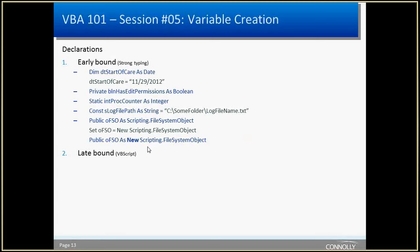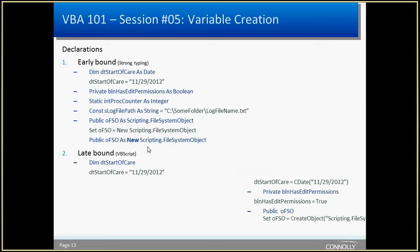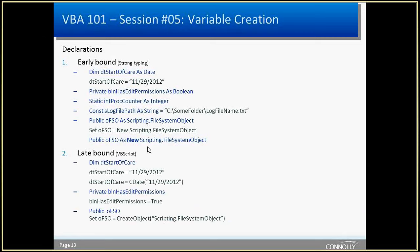Here's an example of a file system object: you declare it as the object type, then have another line that creates and instantiates it. Why not use 'As New' inline? Because in VBA and VB6, there's overhead added in the background every time that object variable is used when declared with 'As New.' I don't use 'CreateObject' except for VBScript because I like IntelliSense — but if you're writing code that will be moved to VBScript, you kind of have to.